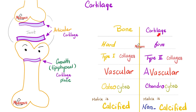Let's talk about cartilage. Cartilage is not as hard as bone — it's firm, a little softer than bone but harder than fat. Think of it like steak: bone is well-done (hard), cartilage is medium (firm), fat is rare (soft). Bones have type 1 collagen, but cartilage has type 2. Bones are vascular; cartilages are avascular — they get nutrition by diffusion from surrounding tissue. Bones have osteocytes; the hero of cartilage is the chondrocyte. Bones have calcified matrix; cartilages have non-calcified matrix. The pathological condition where cartilage starts to calcify is chondrocalcinosis, seen in pseudogout or calcium pyrophosphate dihydrate deposition disease.